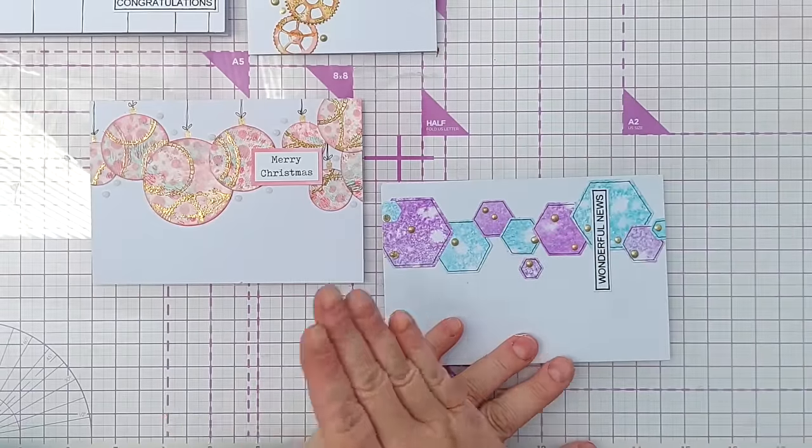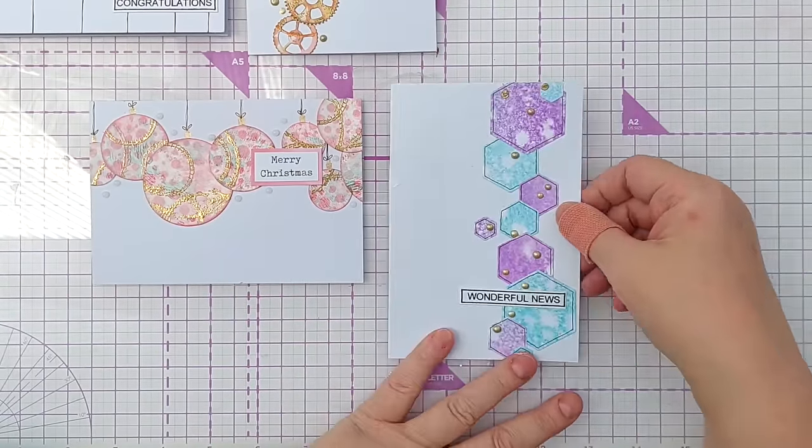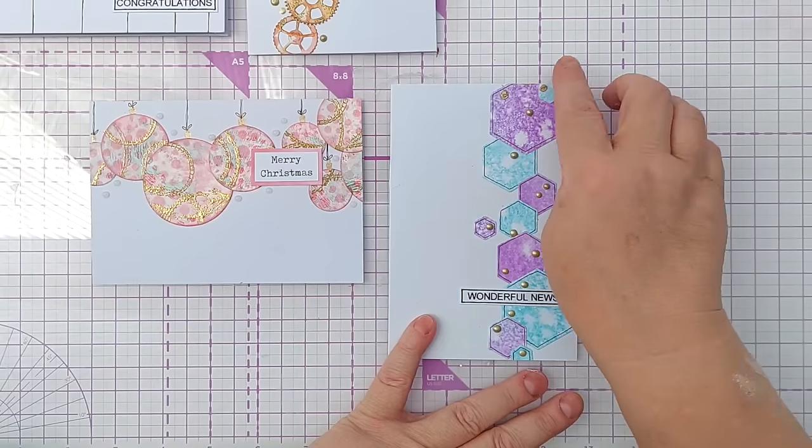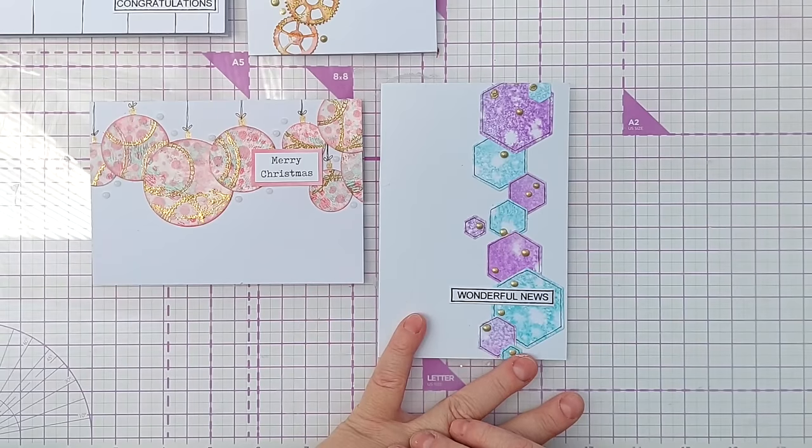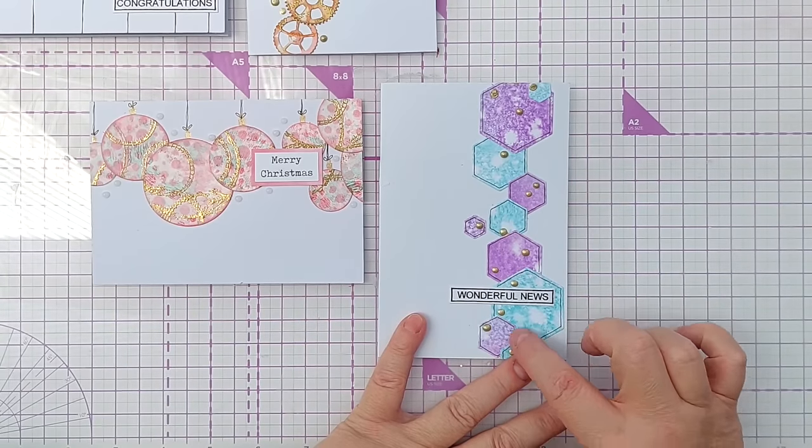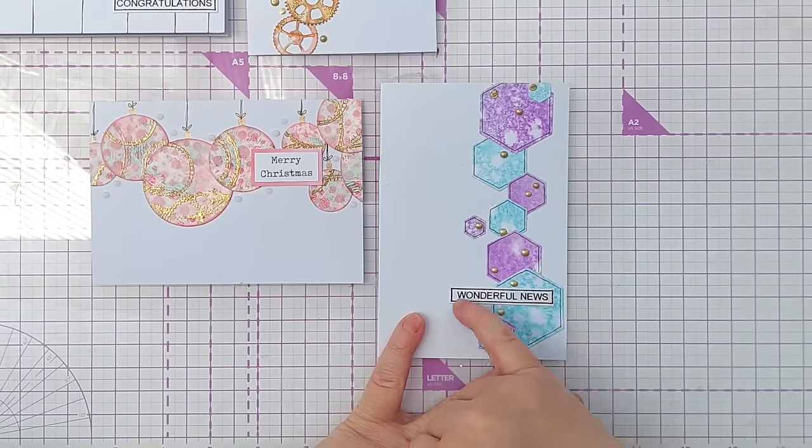Here instead of circular elements I used hexagons. And again I did a portrait card so I arranged these in a higgledy piggledy way. Alternating the colours again to help them stand out. Drew around the edges in black so that they coordinated with this stamp.